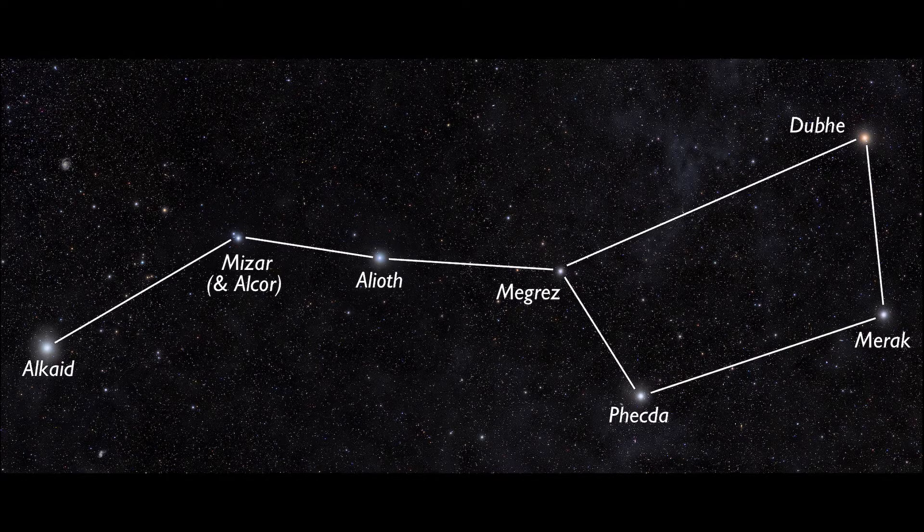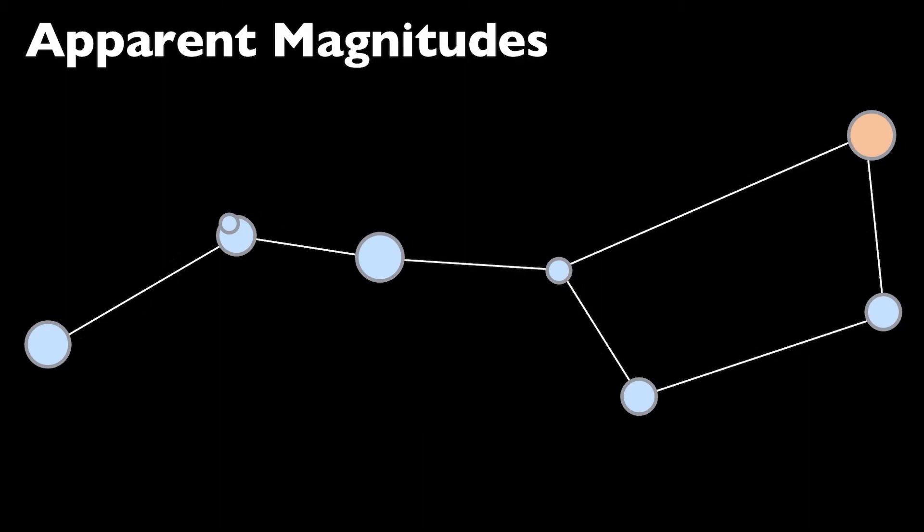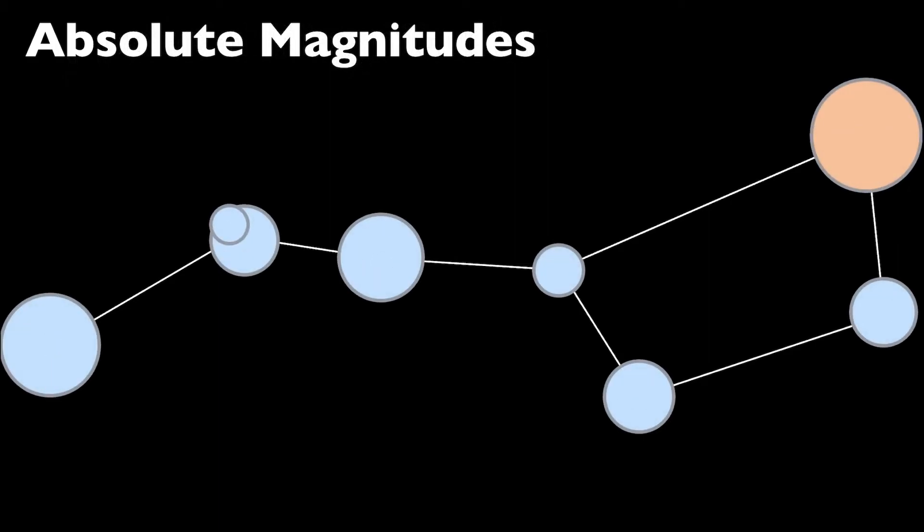Each of these stars appears to us the way they do because of two things: their distance and their brightness. The apparent magnitudes can be seen here, represented by the size of the circles replacing the stars. The bigger the circle, the brighter the apparent magnitude of that star. When we move all of these stars to a standardized distance of 10 parsecs, their brightness changes, increasing significantly because they've all, coincidentally, moved closer to us.